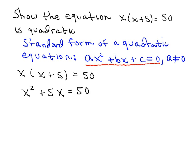And you'll note in the standard form that we want one side to be 0. So what we'll do next is subtract 50 from both sides. So we'll have x squared plus 5x minus 50 is equal to 0.